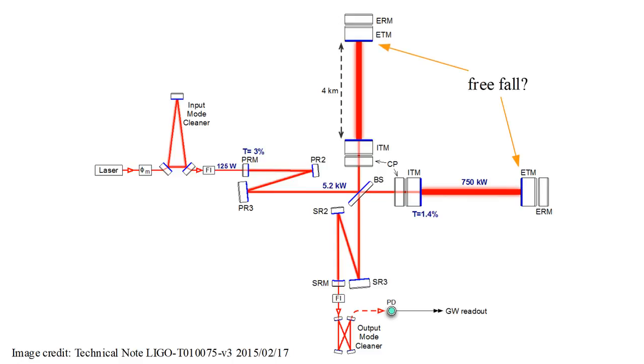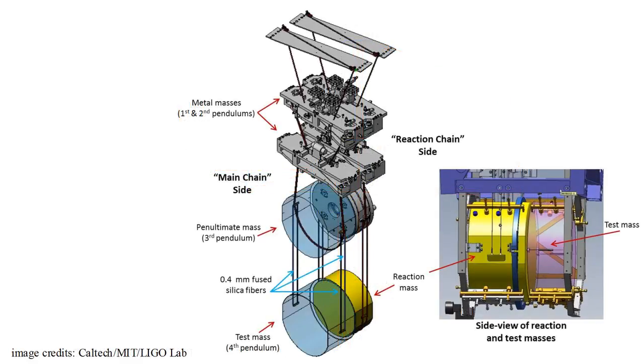There is one final practical issue to consider. An interferometer gravitational wave detector operates on the assumption that the test masses are in freefall. Of course, the LIGO test masses have to be suspended while still effectively being in freefall in the direction of the interferometer arm. LIGO achieves this by suspending test masses at the end of a quadruple pendulum system.